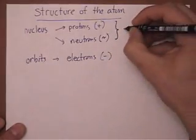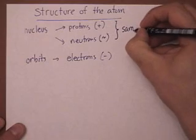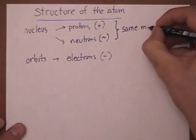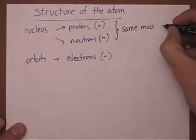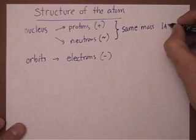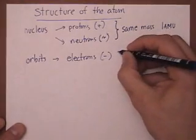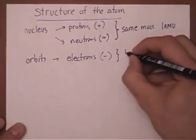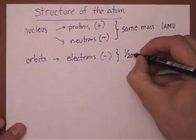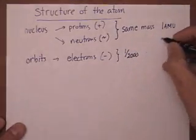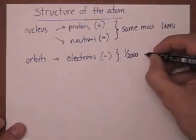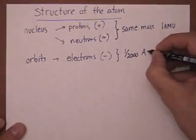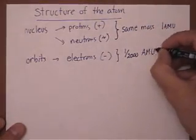Protons and neutrons have the same mass, which is one atomic mass unit. The electrons are about one-two-thousandth of the mass of a proton or neutron, so one-two-thousandths of an atomic mass unit.